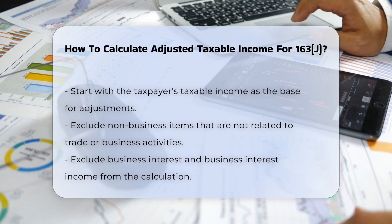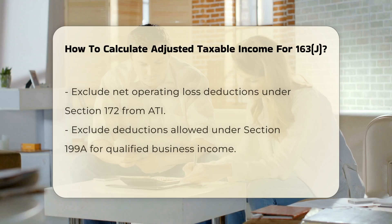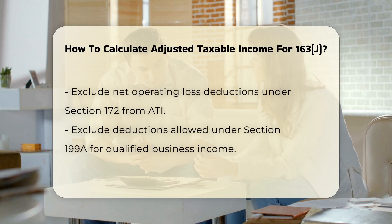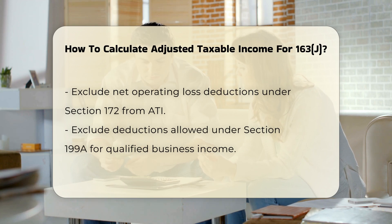Exclude Business Interest and Income. You must also exclude any business interest or business interest income from the calculation. This is crucial because these items are specifically addressed under Section 163(j) and are not included in the ATI computation.